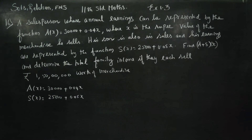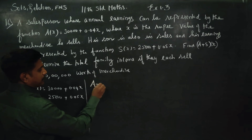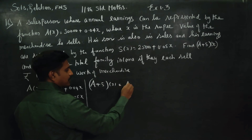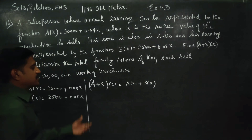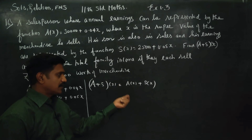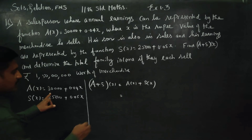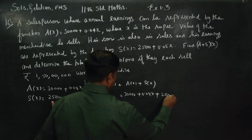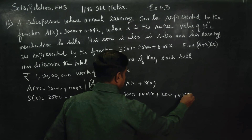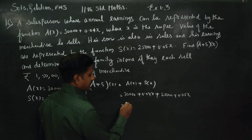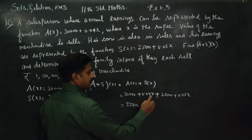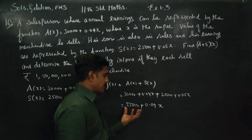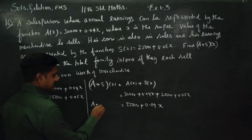They are asking us to find A plus S of x. The formula for function addition is: (f + g) of x equals f of x plus g of x. So A of x plus S of x equals 30,000 plus 0.04x plus 25,000 plus 0.05x, which gives us 55,000 plus 0.09x. This is the total income.